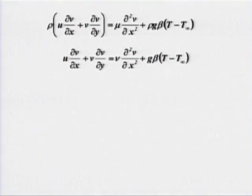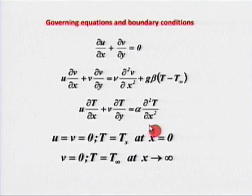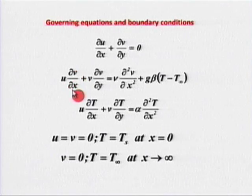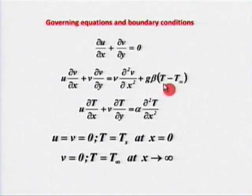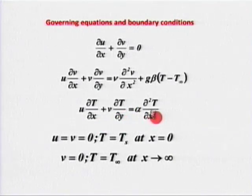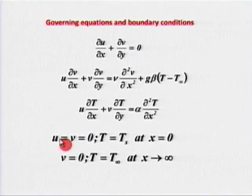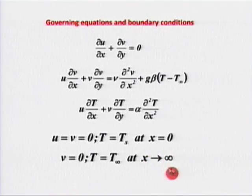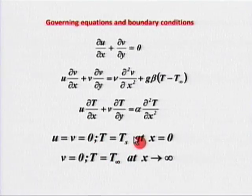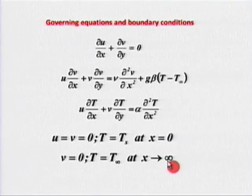The refined equations are: continuity — del-u/del-x + del-v/del-y = 0; momentum — u del-v/del-x + v del-v/del-y = nu del²v/del-x² + g-beta(T minus T-infinity); energy — u del-T/del-x + v del-T/del-y = alpha del²T/del-x². Boundary conditions: u = 0, v = 0 at x = 0; v = 0 as x tends to infinity; T = T_s at x = 0; T = T_infinity as x tends to infinity.